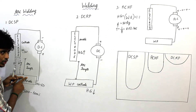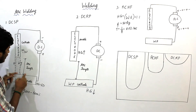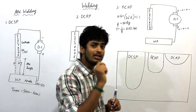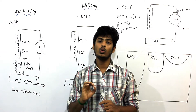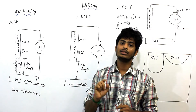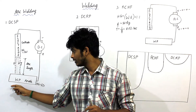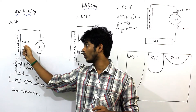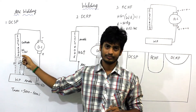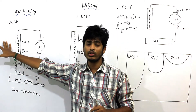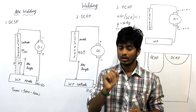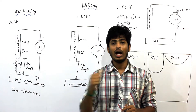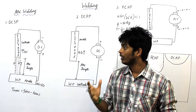Because when the anode produces positively charged ions, they get attracted towards the cathode. But the velocity of negatively charged electrons is very high compared to the velocity of positively charged ions. So at the workpiece, the heat generated is 67% and at the electrode heat generated is 33%. Because at cathode it produces negatively charged electrons which come towards the anode, so the anode receives more amount of heat — more heat is generated at anode compared to cathode.